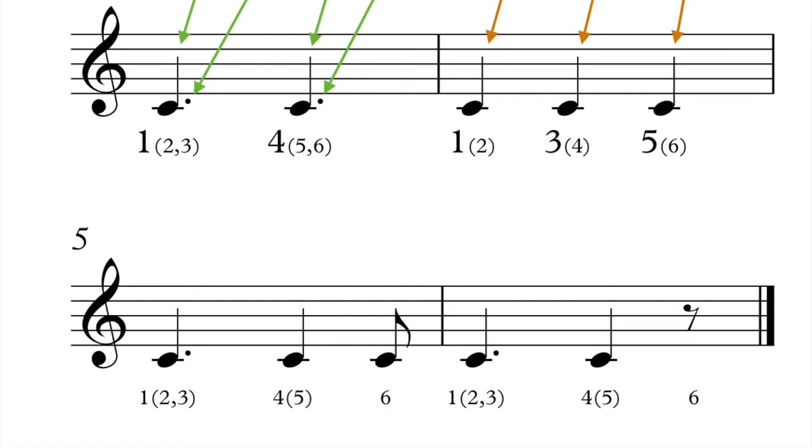If I were to count these two measures at the bottom, I'm going to make the strong beats louder and the weak beats softer. This bottom measure would sound like this. One, two, three, four, five, six. One, two, three, four, five, shh, with a rest on the sixth beat.